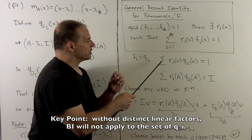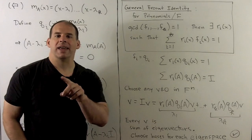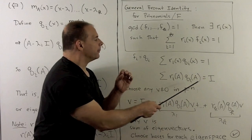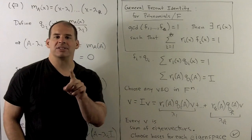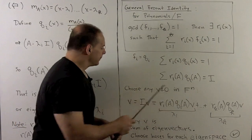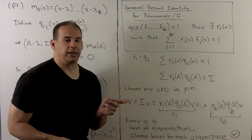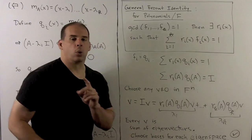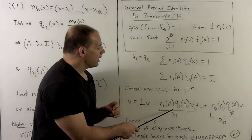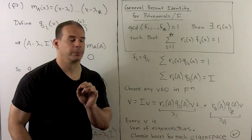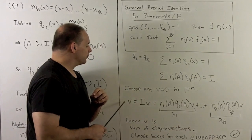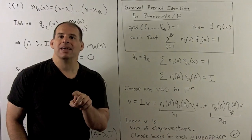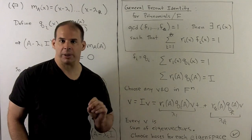Applying this matrix equation to any vector v, we have v equals the sum of r sub i of A times Q sub i of A applied to v. Each term is either zero or an eigenvector for a different eigenvalue. So any vector v can be written as a sum of eigenvectors. Choosing a basis for each eigenspace gives a basis of eigenvectors for the full vector space, completing the proof.